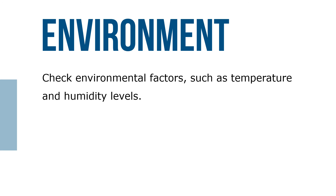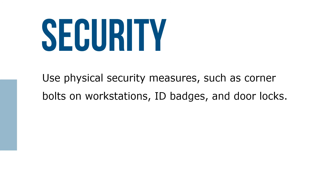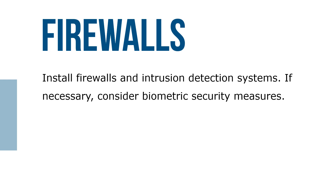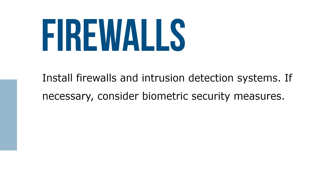Check environmental factors such as temperature and humidity levels. Use physical security measures such as corner bolts on workstations, ID badges, and door locks. Install firewalls and intrusion detection systems. If necessary, consider biometric security measures. Organizations need to follow every step; however, some might need to include even more to fit their specific needs.